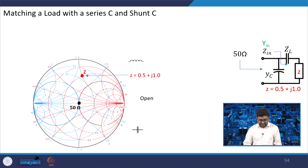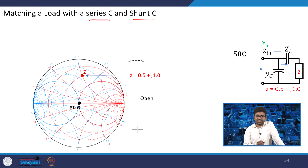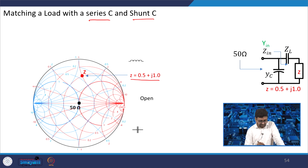In some cases, a capacitor-capacitor solution is also available — a series C and shunt C. But if your impedance is more inductive, meaning Z = 0.5 + j1 and the point is in the upper part of the Smith chart, then you can use capacitive matching in on-chip design and your chip size will reduce.